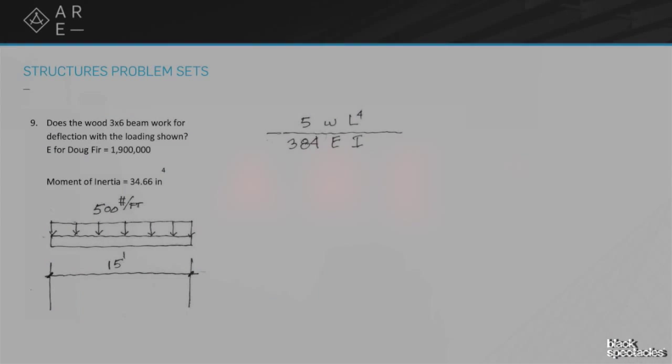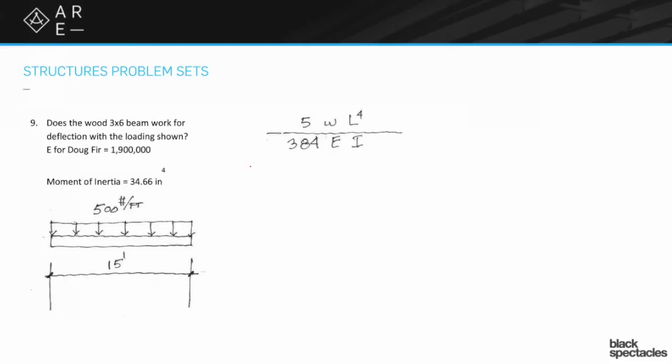Okay, so we're on problem nine. It asks: Does the wood 3x6 beam work for deflection with the loading shown? The modulus of elasticity E for Douglas Fir is 1,900,000, and it gives the moment of inertia for the 3x6 as 34.66 inches to the fourth. This is fun, exciting stuff.